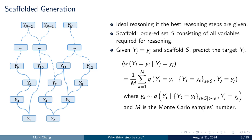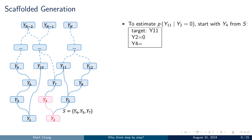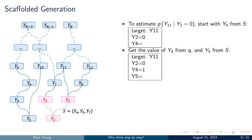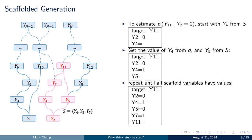Here's an example of scaffolded generation. The target variable is y-11 and the observed variable is y-2, with a value of 0. In the first step, the scaffold s provides an intermediate variable y-4, and the model q needs to predict the value of y-4. Once the value 1 is predicted, the next intermediate variable y-5 is provided by the scaffold s. The model must also predict the value of y-5. These steps are repeated until all scaffold variables have been assigned values. Finally, the model q predicts the value of the target variable y-11, given all the scaffold variables and the observed variable.